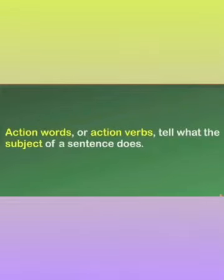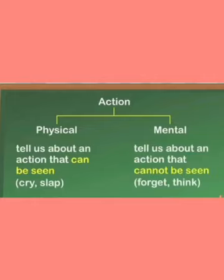Action words or doing verbs tell what the subject of a sentence does. This action can be physical or mental. Physical action tells us about an action that can be seen — for example, eat, drink, dance, cry, slap, and so on. All these actions can be seen, so they are physical actions.